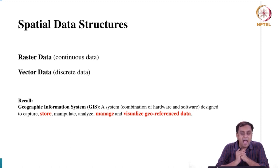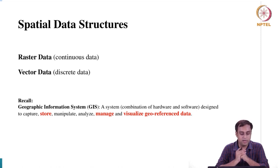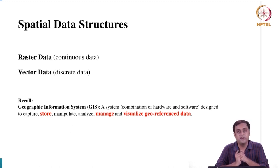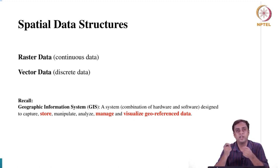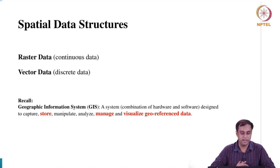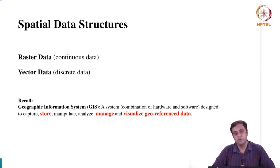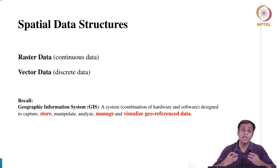On your screen are two different types of data structures. One is called raster data and the second is called vector data. I am characterizing on this slide that raster data are continuous data and vector data are discrete data. This is the fundamentally distinct attribute between these two data sets — raster data are continuous in nature and vector data are discrete in nature in the way they are stored, managed and visualized.